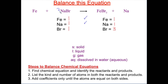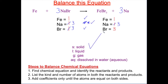If I add a coefficient of three in front of the NaBr, that will change the bromine into a three and balance it out. But by doing that, the sodium becomes a three, which means I've actually unbalanced the sodium. So I go back to the right-hand side and add a coefficient of three in front of the sodium, and this becomes three. Now iron is one, sodium is three, and bromine is three. This equation is balanced.